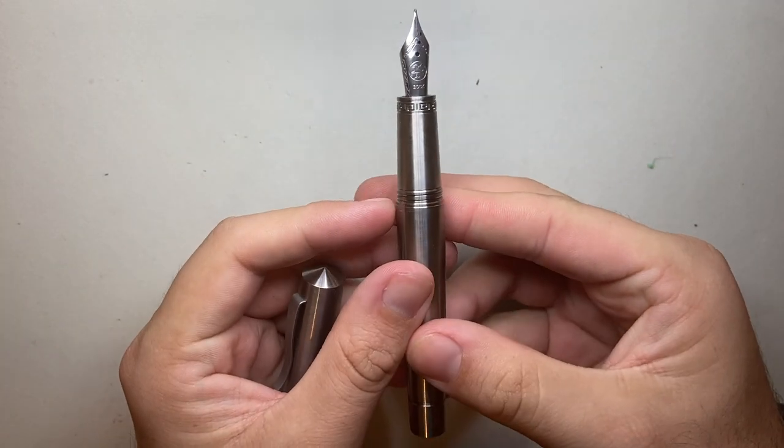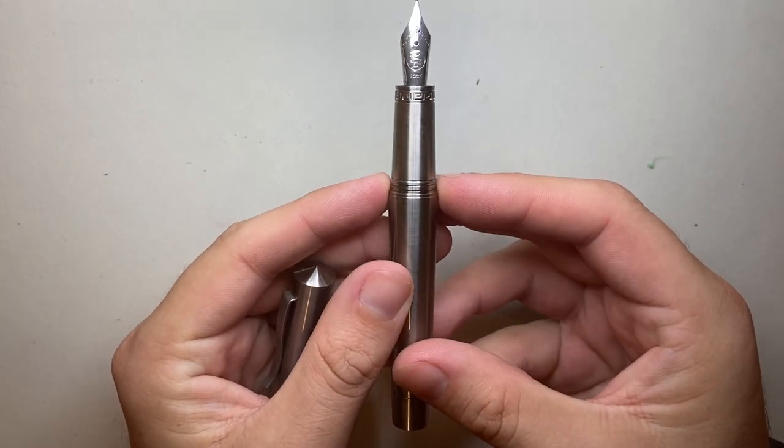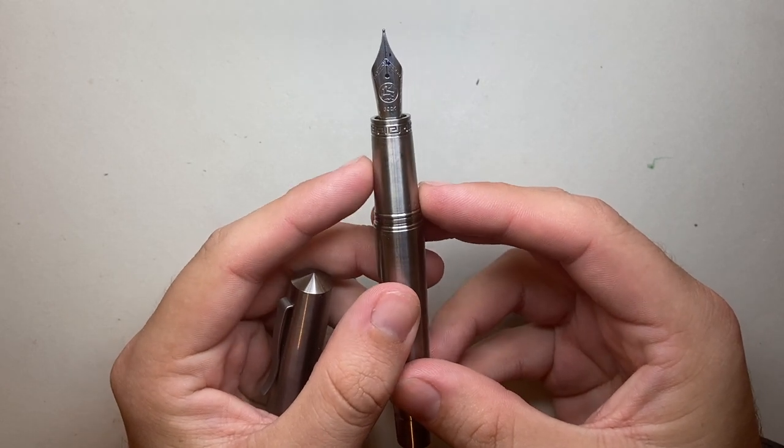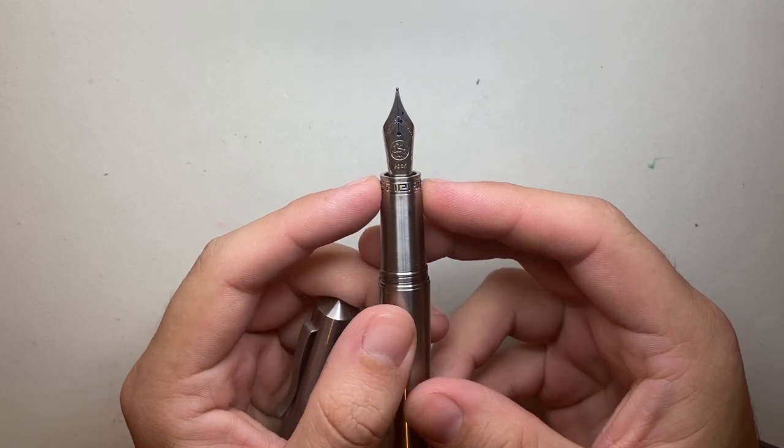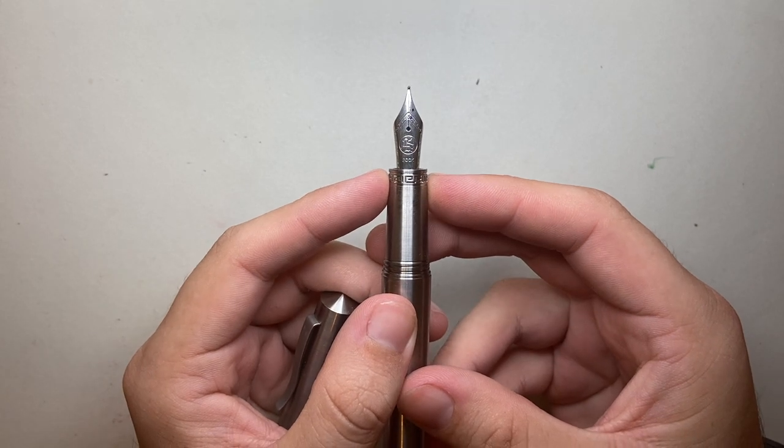The grip section starts with a little step down, very minor, onto some nice blocky threads, and then a taper down to that Greek key, and then you're left with a Bock nib there.